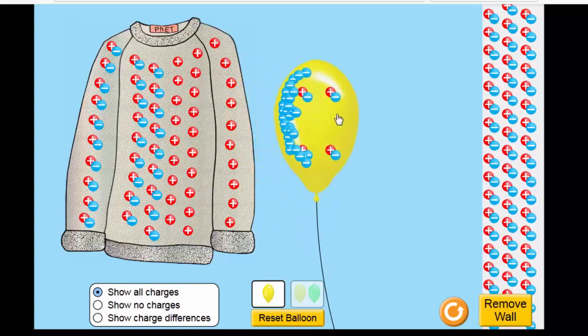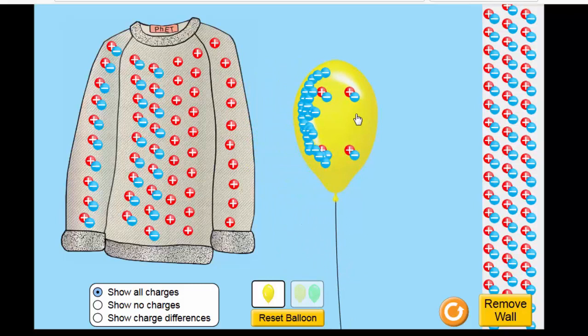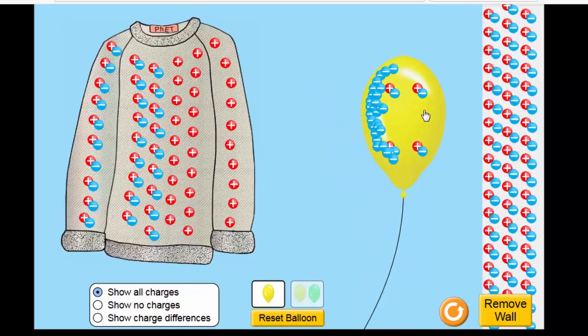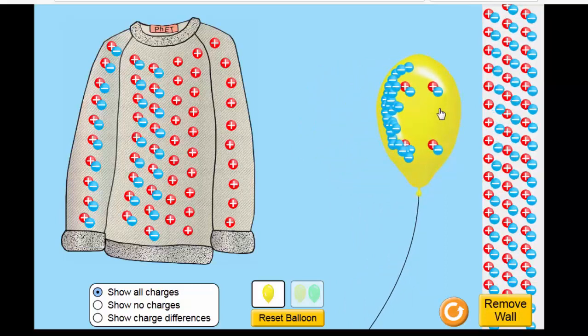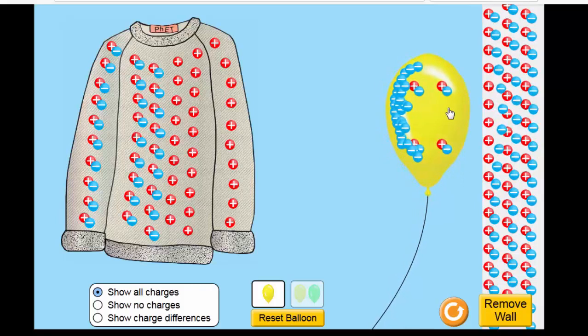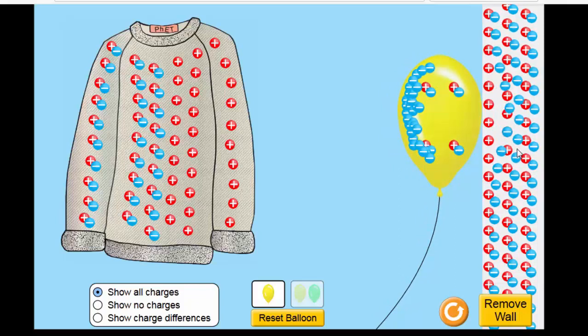Now what will happen here if I bring the balloon close to the wall? Now notice the wall is neutral, while the balloon is negative. As the balloon approaches the wall, the negative charges on the wall is being repelled. So now the positive charges in the wall getting closer to the balloon. And therefore the wall will be able to attract the balloon.